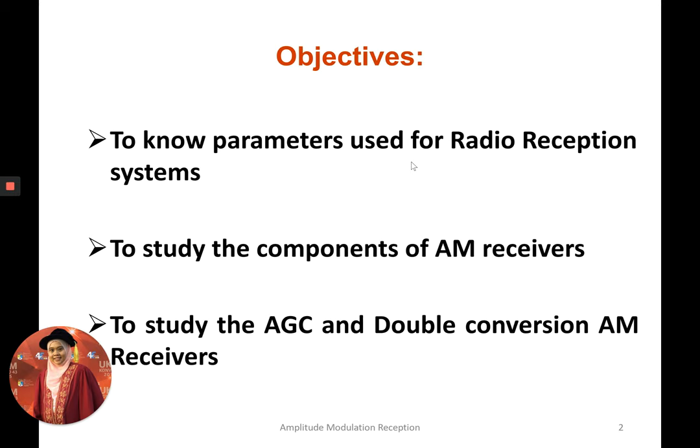So in the last video, we have known the parameters used in the system. There are five parameters and also all the components inside the AM receiver. There are also five sections or five stages.